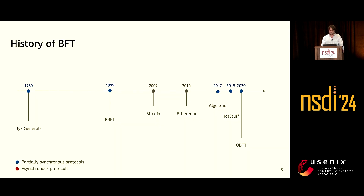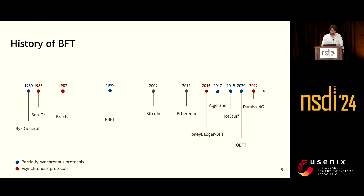In parallel, there has been a line of research into fully asynchronous protocols that started in the 80s with Ben-Or and Bracha's work, and has seen a recent series of practical proposals starting with HoneyBadger, followed by the Dumbo family of protocols, and others since. We think these asynchronous protocols usually fall into two families: the first generation, which were very elegant but also very inefficient; and the most recent proposals, which are very efficient but also usually very complex.